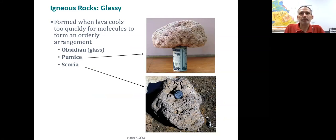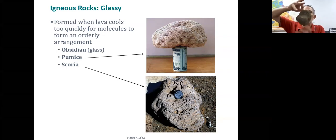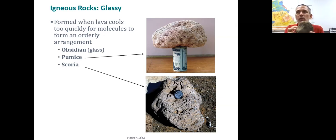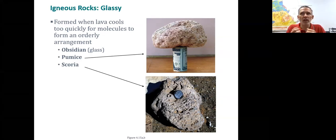I mentioned vesicles. In some cases, those vesicles get bigger and bigger. We can end up with samples that look quite heavy but are exceedingly light — a sample of just a few ounces. We call this pumice. You may be familiar with pumice as an abrasive — it has silica in it, so it's a good abrasive, and it has all these little pockets to hold dead skin that you could scrape along and file away dead skin cells.